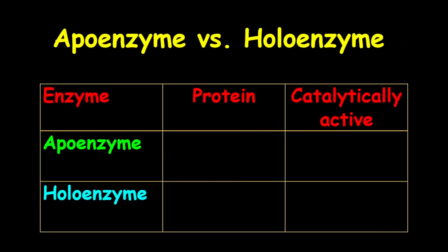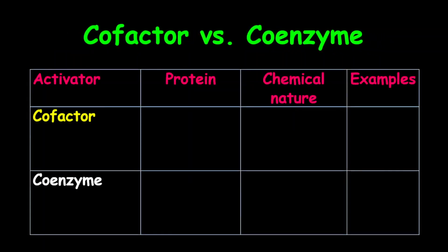A quick comparison between apoenzyme and holoenzyme: an apoenzyme is a protein and holoenzyme is also a protein. The apoenzyme is catalytically inactive while the holoenzyme is catalytically active. A quick comparison between cofactor and coenzyme: cofactor is not a protein, and coenzyme is also not a protein. In terms of chemical nature, cofactor is inorganic while coenzyme is organic.